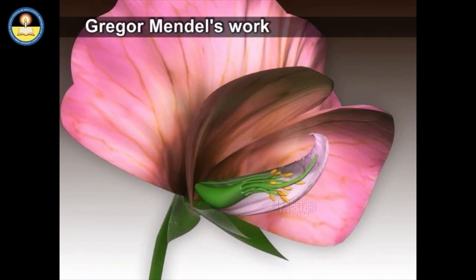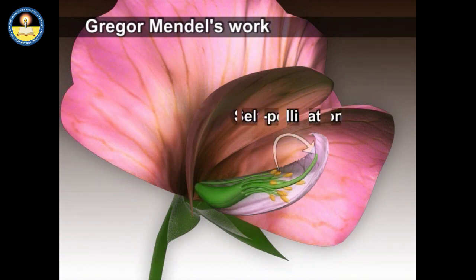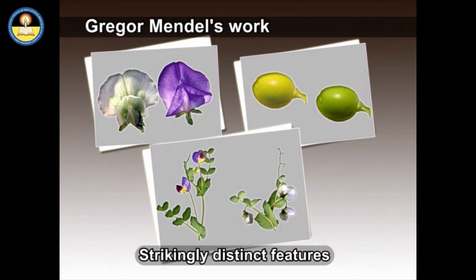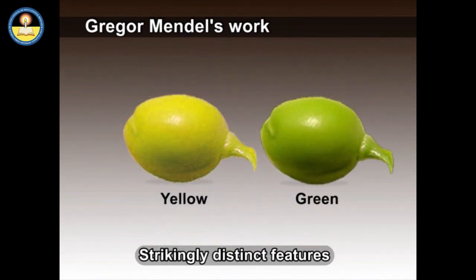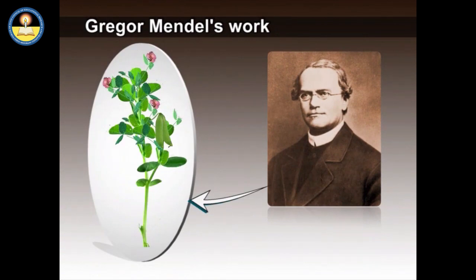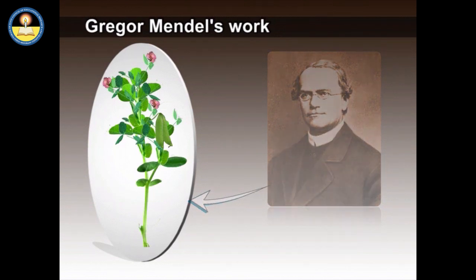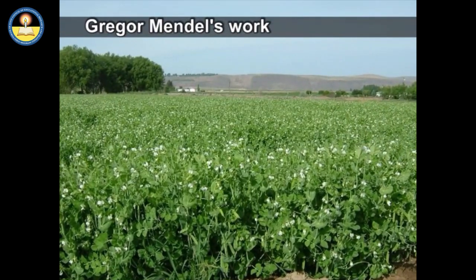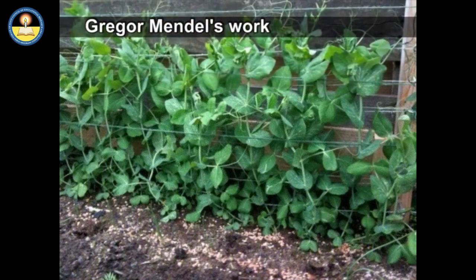Pea plants have both male and female reproductive organs; as a result, they can either self-pollinate or cross-pollinate with another plant. Apart from this, pea plants have strikingly distinct, easily detectable contrasting features such as seed color, flower color, and height of plant. These are the reasons Mendel chose the pea plant to conduct his experiments. He recognised the mathematical patterns of inheritance from one generation to the next. These experiments took him 8 years, during which Mendel grew over 10,000 pea plants, keeping track of progeny number and type.